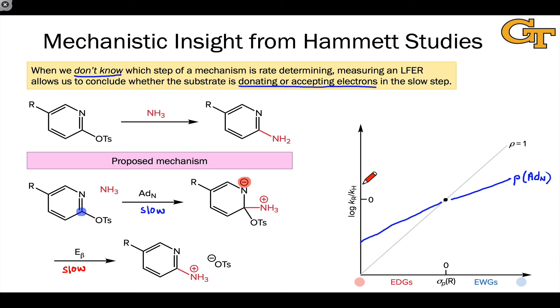This means the reaction would be fastest for strong electron donating groups. The rate would decrease as the donating power decreases or the withdrawing power increases. This would be the situation if beta elimination were rate determining.